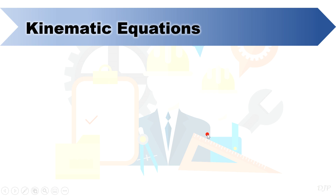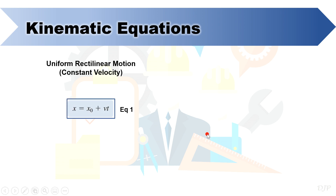Good day class, let us now continue with our lecture. In physics, you learn that for a rectilinear motion with constant velocity, displacement is simply equal to average velocity times time. Or in general, final position is equal to initial position plus average velocity times time. However, take note that if the velocity is constant, average velocity is equal to its velocity at any instant, including the initial velocity. Instead of writing V sub AVE, it is commonly practiced to write it simply as V, because this formula is commonly used for problems with constant velocity.